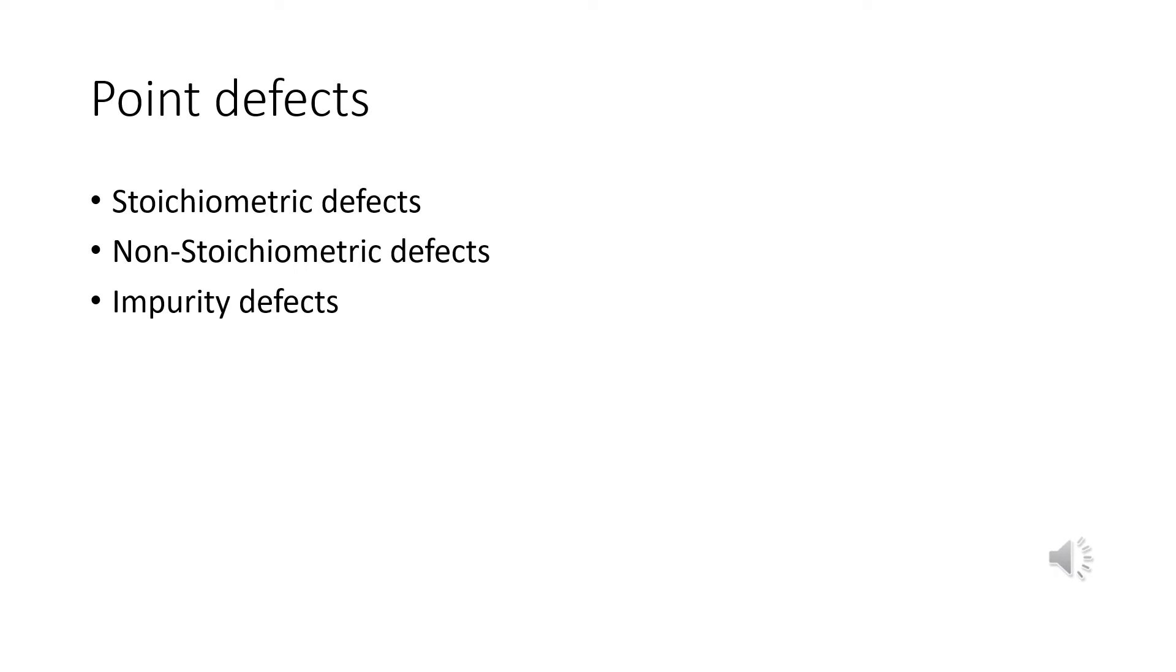What is point defects? Point defects are the irregularities or deviations from ideal arrangement around a point or an atom in crystalline surfaces. That is, it arises due to an atom or ion missing from the lattice site or a foreign atom or ion occupying a lattice site.